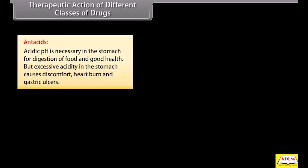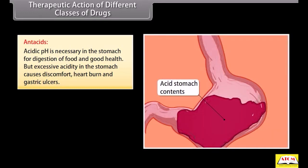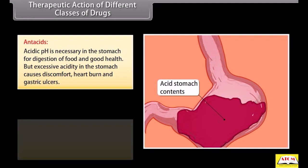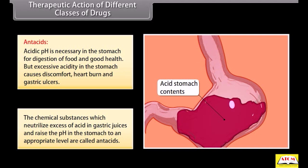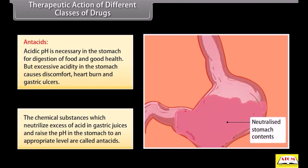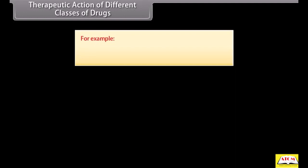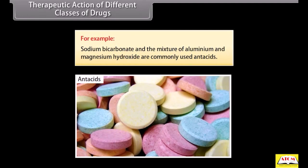Now we will discuss the therapeutic action of a few important classes of drugs. Antacids: acidic pH is necessary in the stomach for digestion and good health, but excessive acidity causes discomfort, heartburn and gastric ulcers. Chemical substances which neutralize excess acid in gastric juices and raise the pH to an appropriate level are called antacids. For example, sodium bicarbonate and the mixture of aluminium and magnesium hydroxide are commonly used antacids.